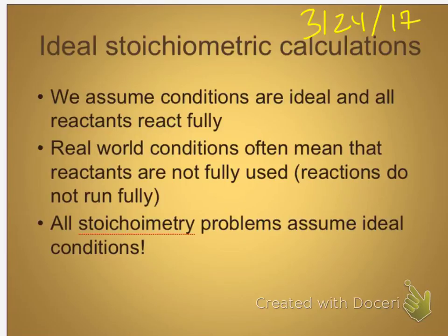What we've been doing are basically ideal stoichiometric calculations. Stoichiometry — it's fun to say. This is like an idealized version of what really happens in a chemical reaction. We assume that everything goes perfectly physically — every molecule that could possibly bump up against another molecule and react does so. Everything's moving fast enough.